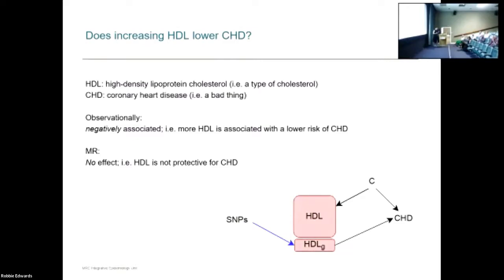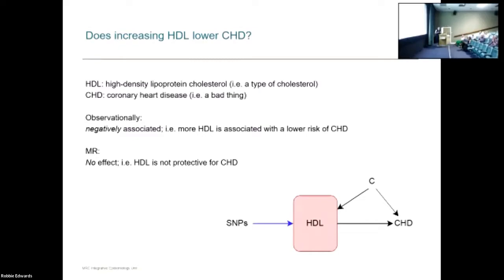Bringing it back to gene-environment equivalence — this is where it's really important and easier to illustrate with an example. Your SNPs are only showing the genetically predicted variation in HDL, but the confounders are affecting everything else and what you observe is everything. So we're assuming that varying HDL through genetic variants is equivalent to varying it through other environmental influences, and that is quite an important assumption for taking MR results forward to think about their implications for public health.